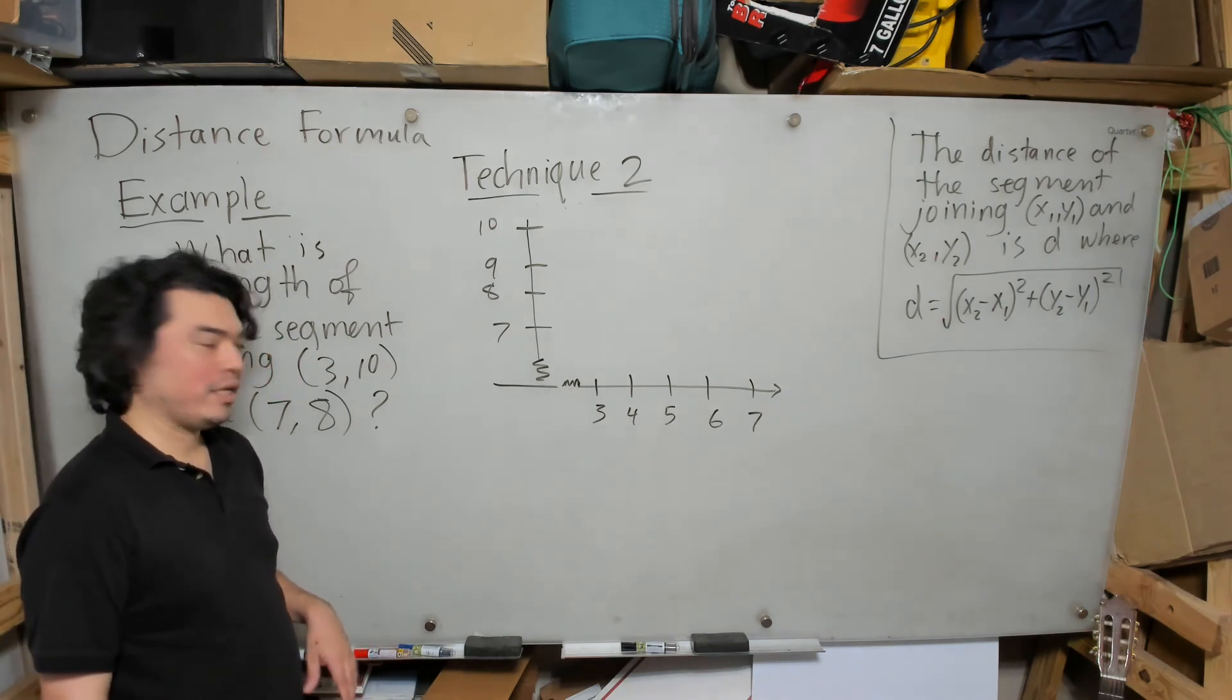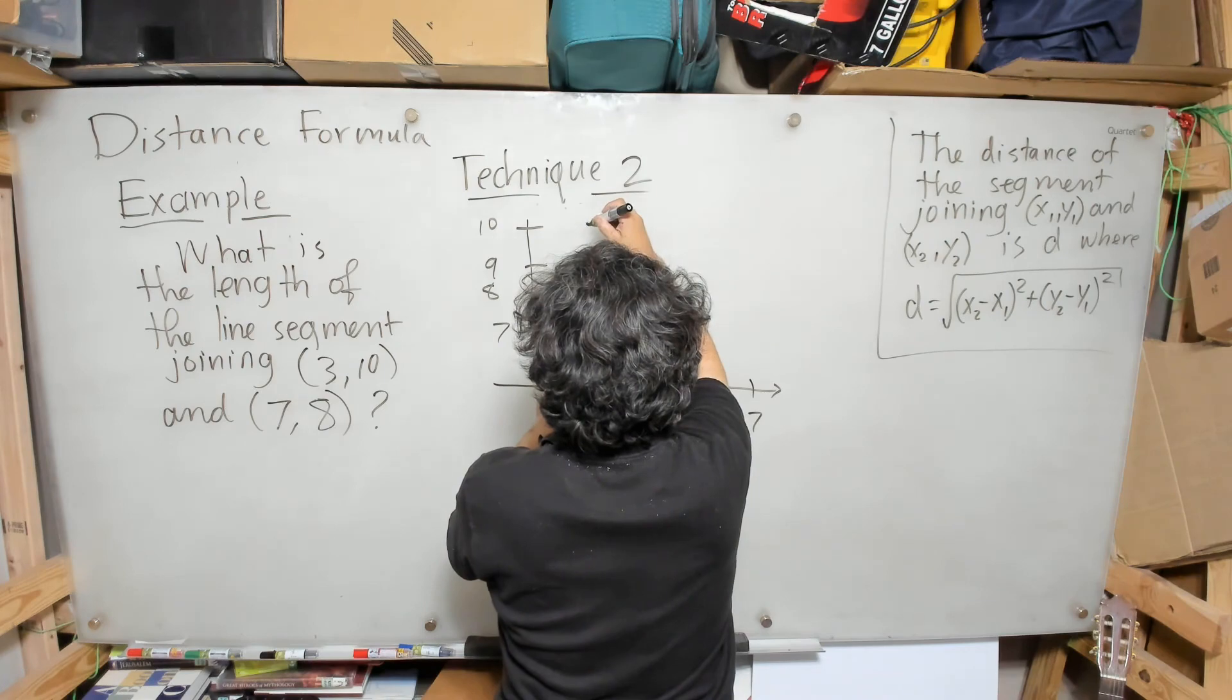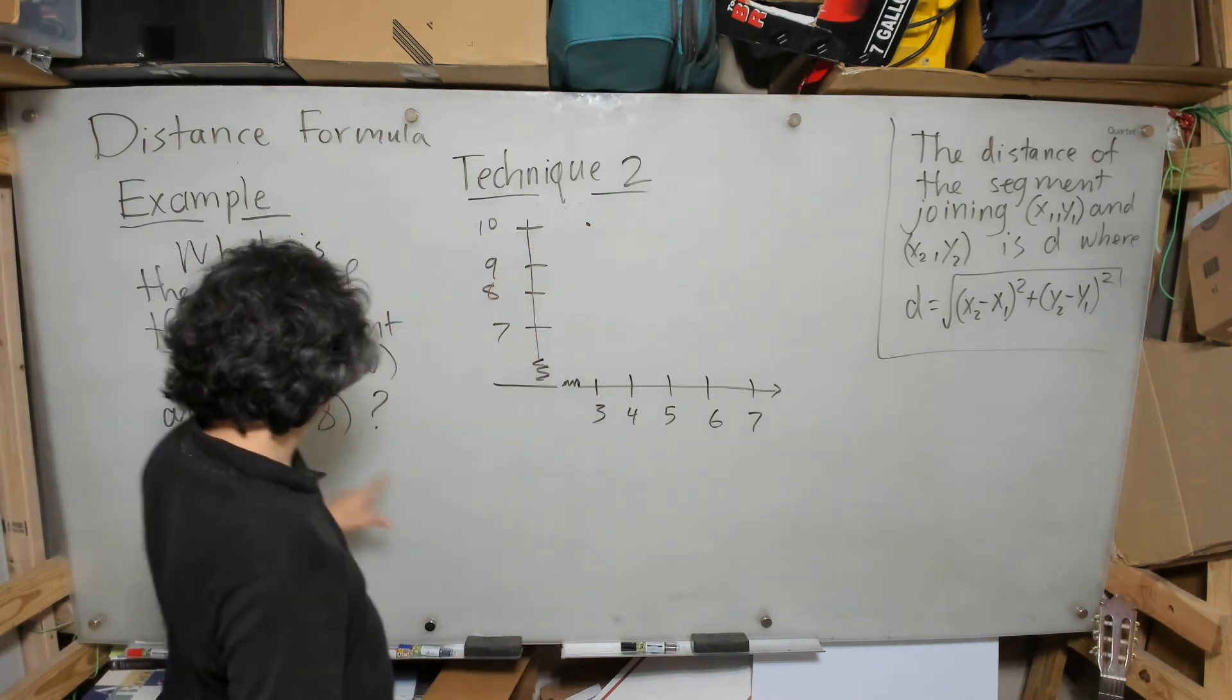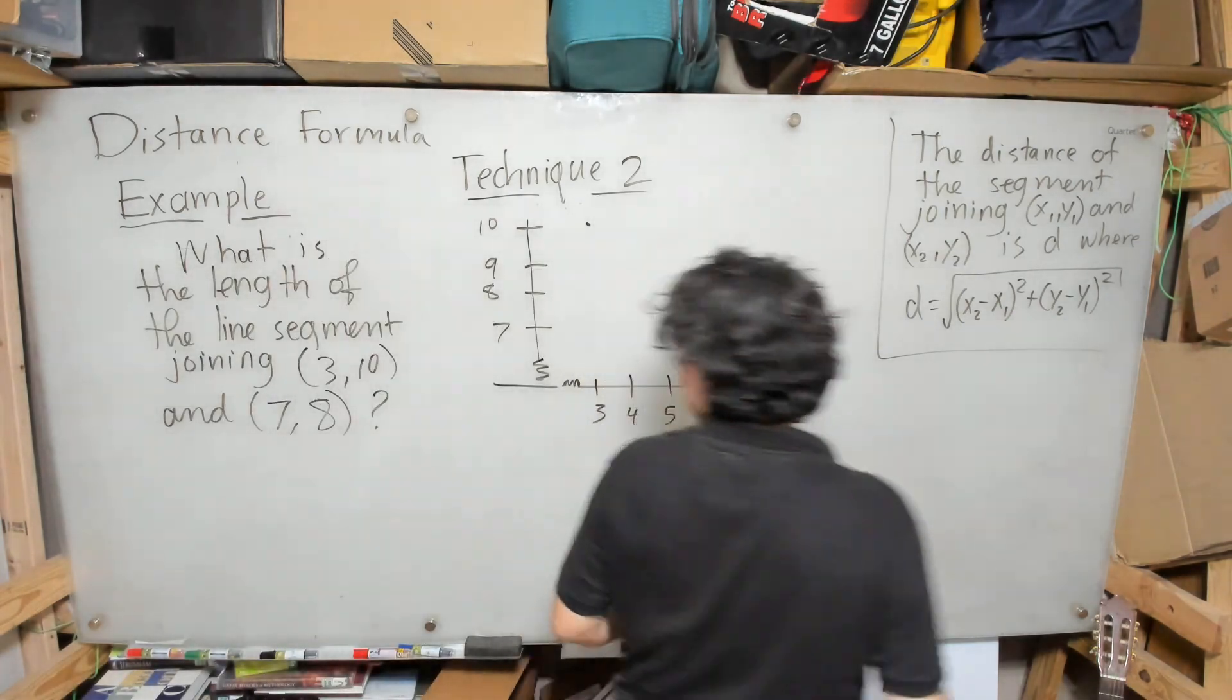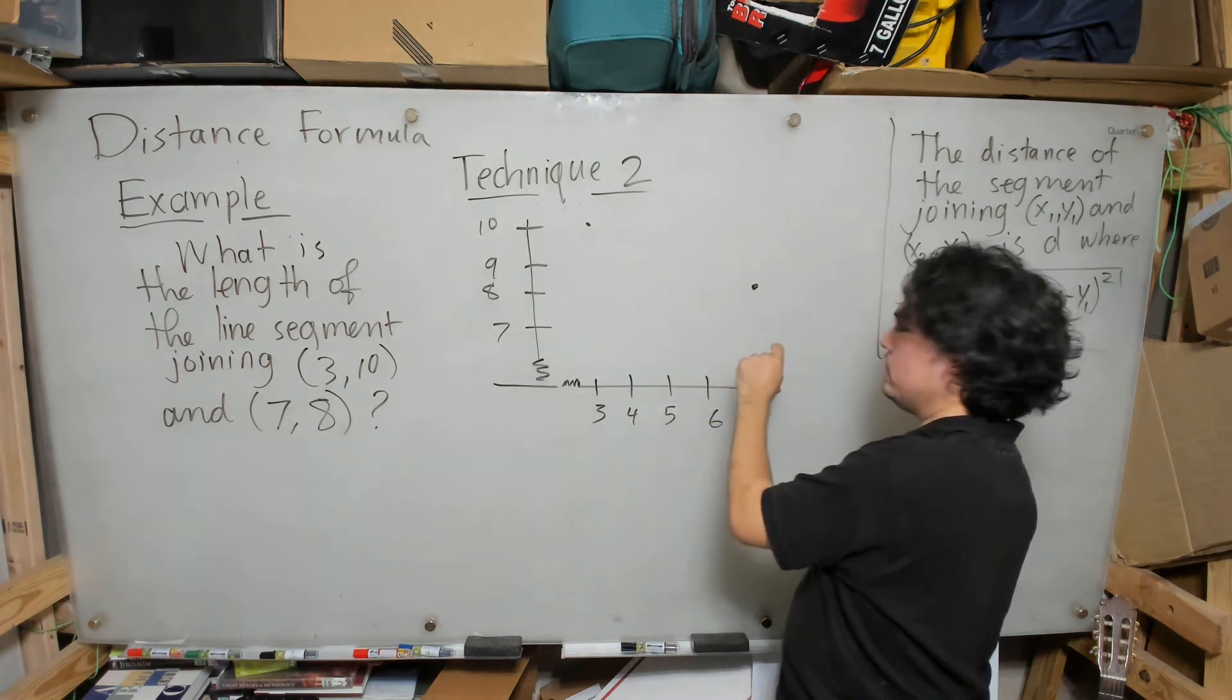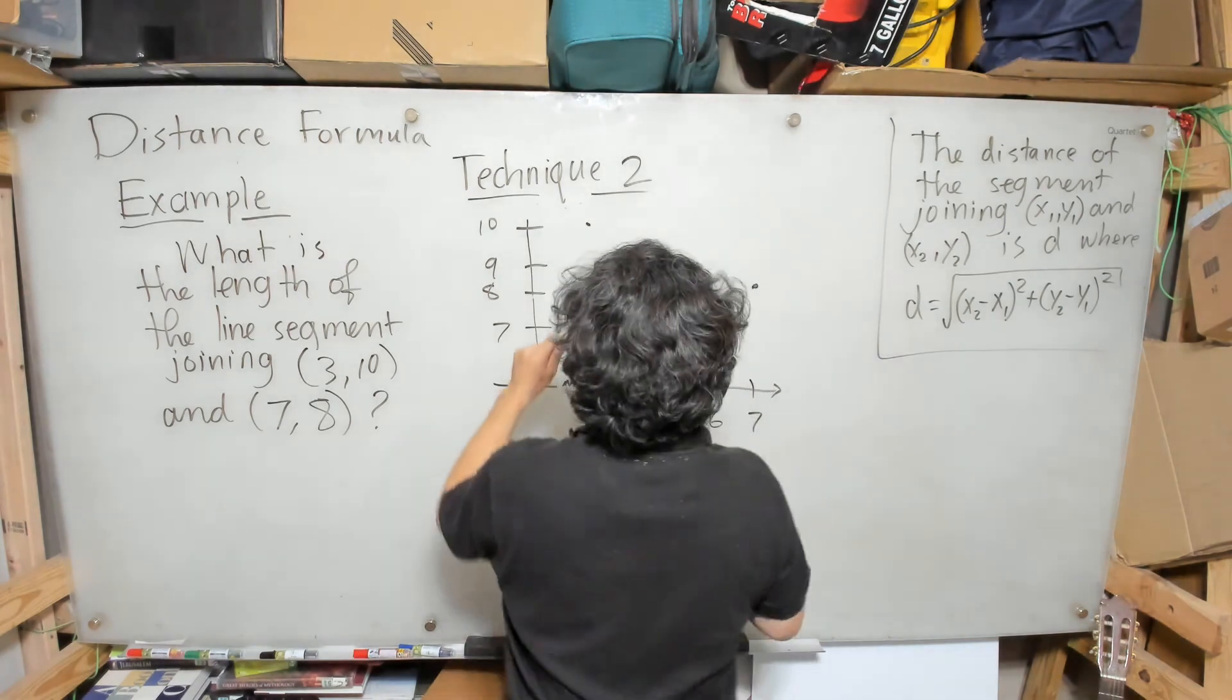Then I can put here my x-axis, but again I can put a squiggly here to indicate that I'm only showing a certain part of it. So I'll show 3, 4, 5, 6, and 7. I know this looks like cheating to you guys, but that's just the way it is. Now I'm going to plot this point (3,10). It's right there because the x-coordinate is 3, the y-coordinate is 10. My second point is (7,8), so it has a 7 in the x-coordinate, then I go up to 8.